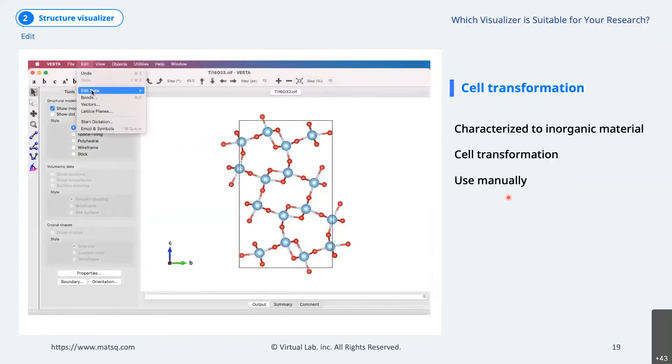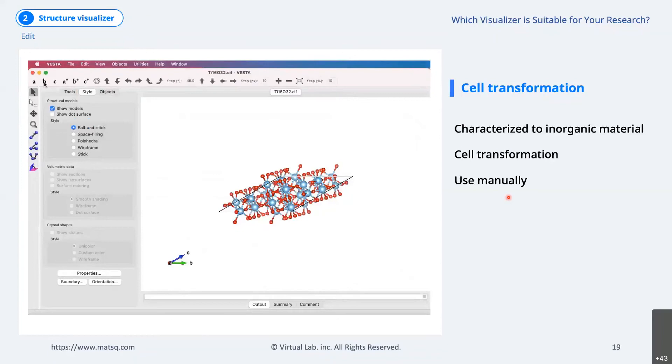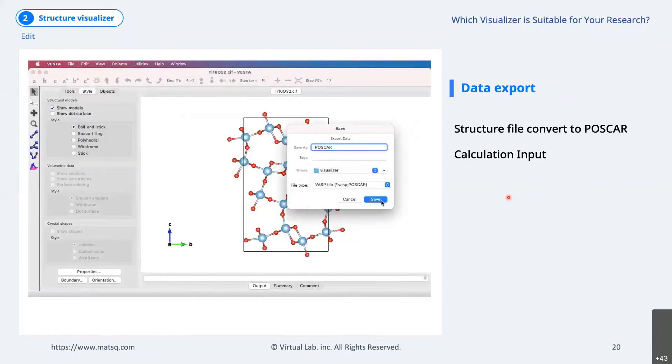VESTA provides powerful editing features characterized to inorganic, one of which is the rotation matrix. This lattice transformation can be used manually. VESTA provides the ability to export to a VASP structure file.